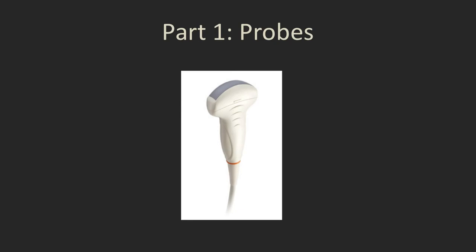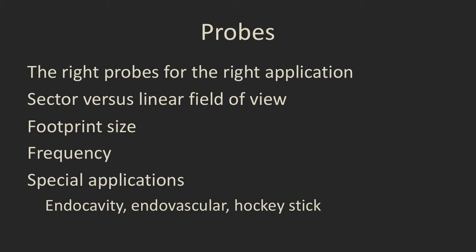So let's start with the first topic, and that is probes or ultrasound transducers. For any specific use of ultrasound, you need to select the correct probe. This means selecting one with the appropriate field of view, the appropriate footprint size, using it at the correct frequency, and then you may need specialized probes for specific applications such as endocavity, endovascular, or hockey stick. And we're going to go through each of these in turn.